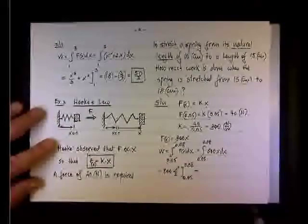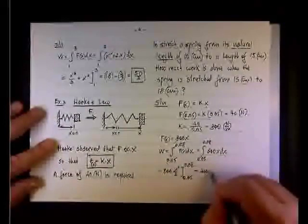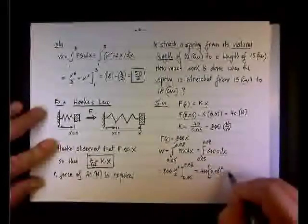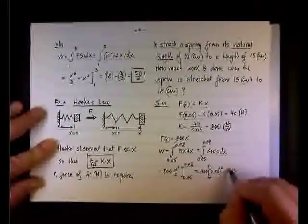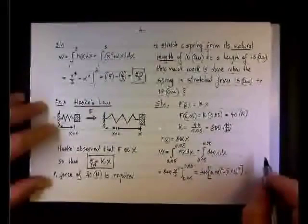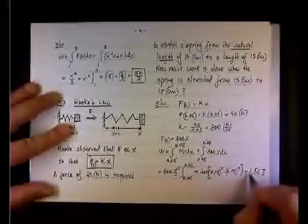So we're looking at 800x squared over 2 from 0.05 to 0.08. Tommy, here's the answer to your question again. Meters. And this, of course, is 400 times 0.08 squared minus 0.05 squared. When you calculate it, you come up with 1.56 joule.